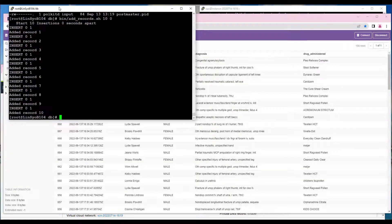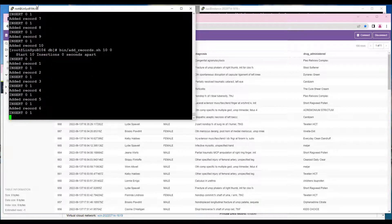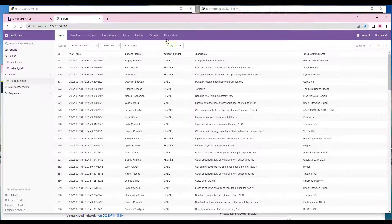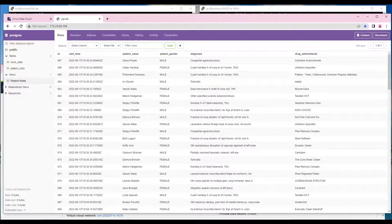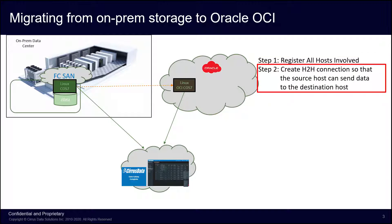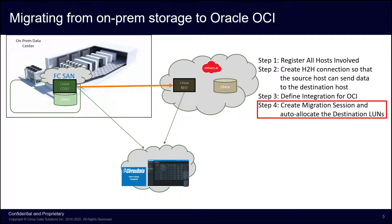Let's start a workload on the database by running this script to add records. Now records are being added constantly. Note that we have a number of records so far, and they're continually increasing. The on-premises fiber channel disk has an active workload. We now want to migrate this live and cut over to the new Oracle Cloud Storage without any downtime. The first step is now complete. The next three steps are to create the H2H connection between the source and destination, define the integration for OCI, and create the migration session and auto-allocate destination LUNs.